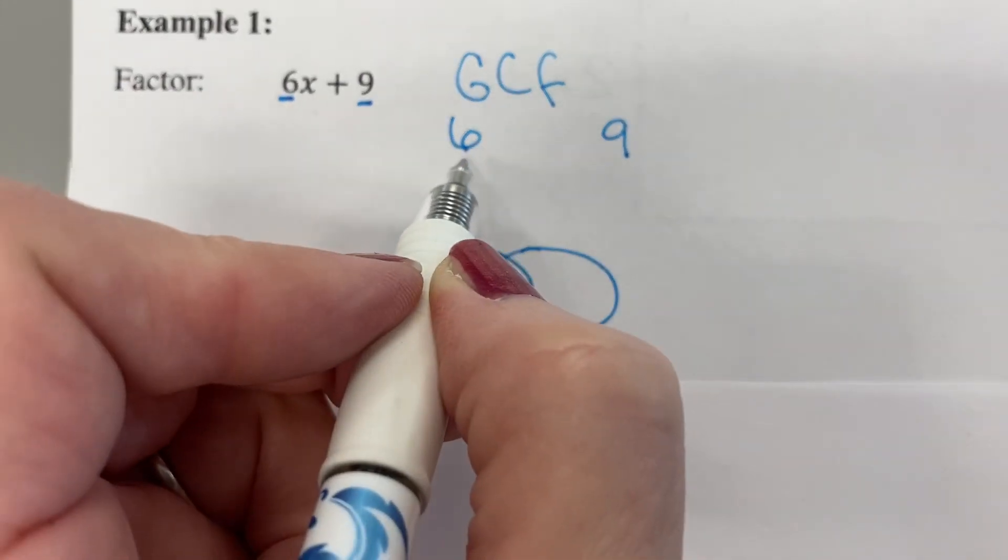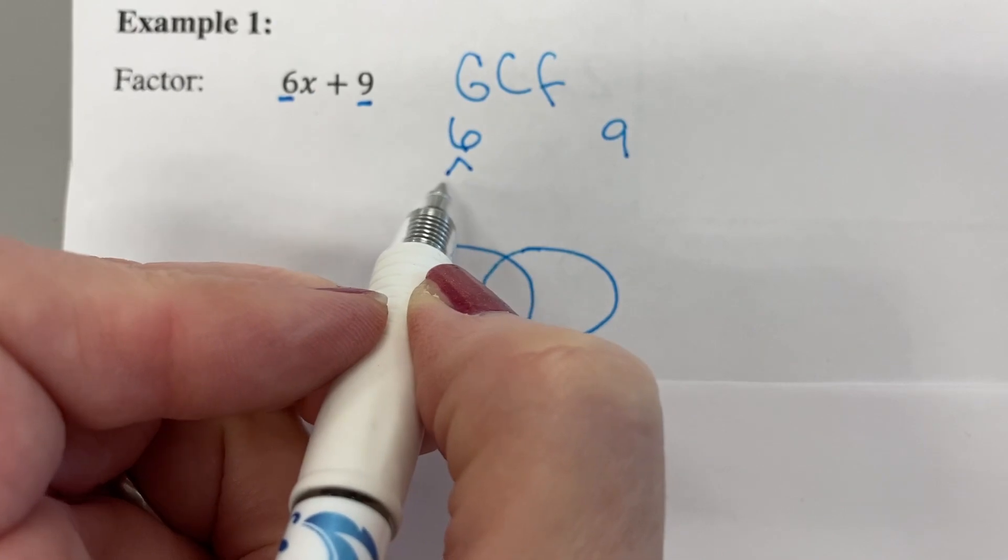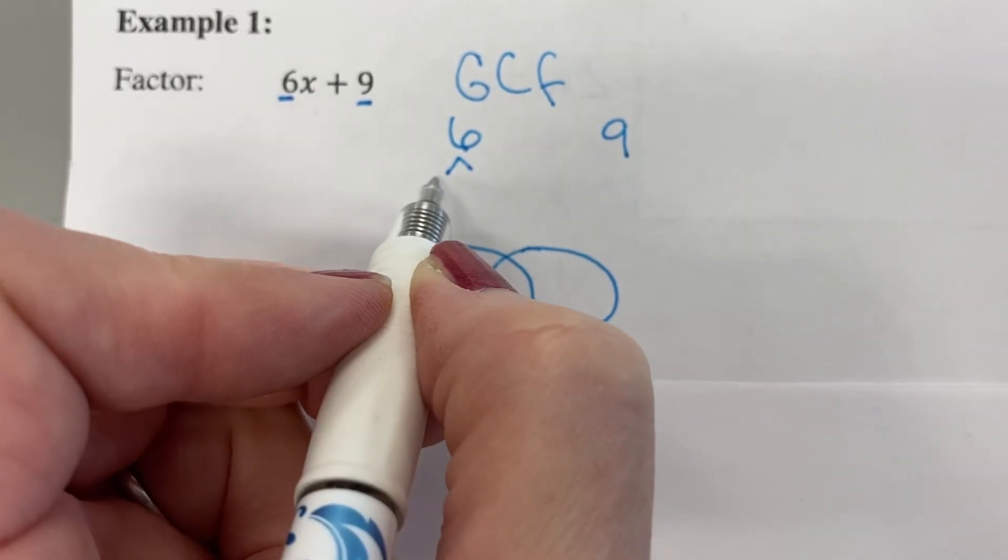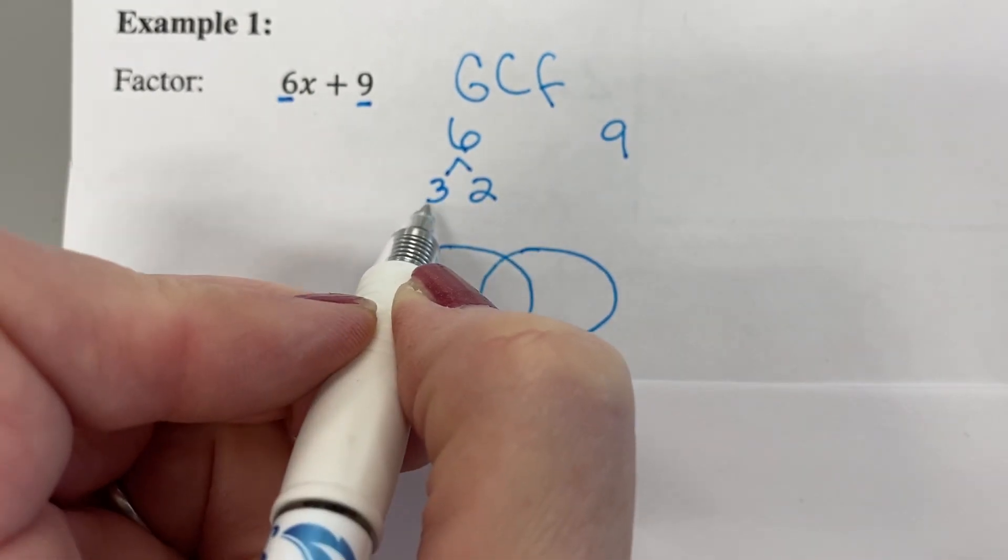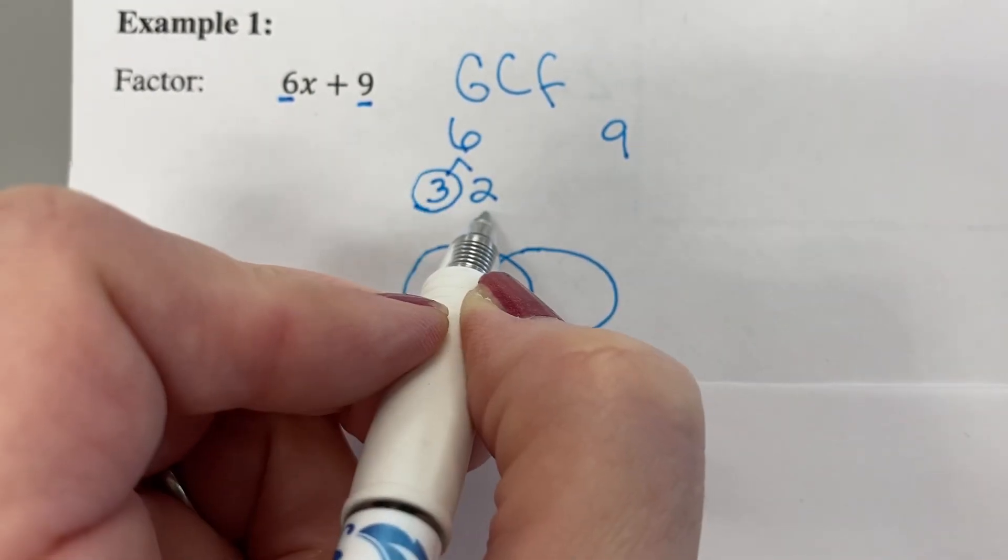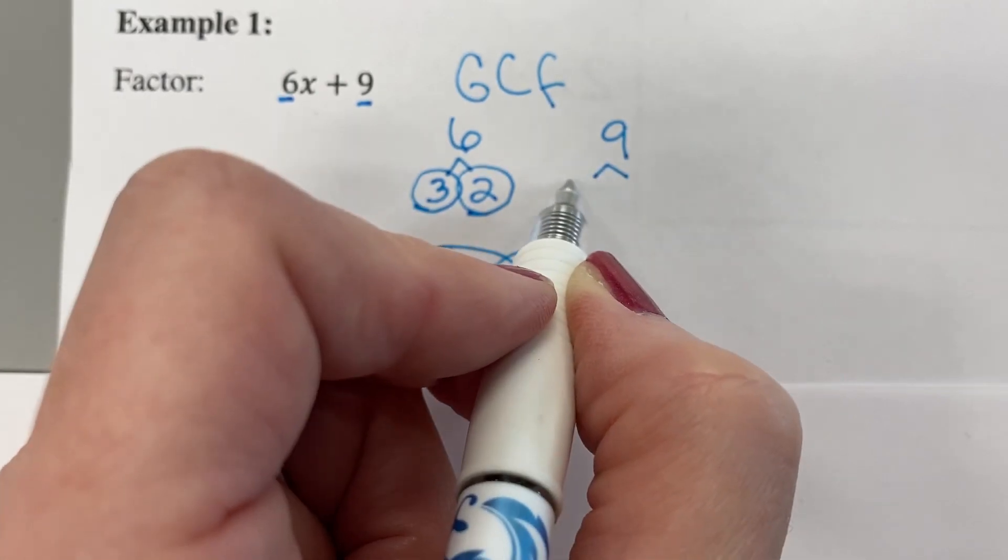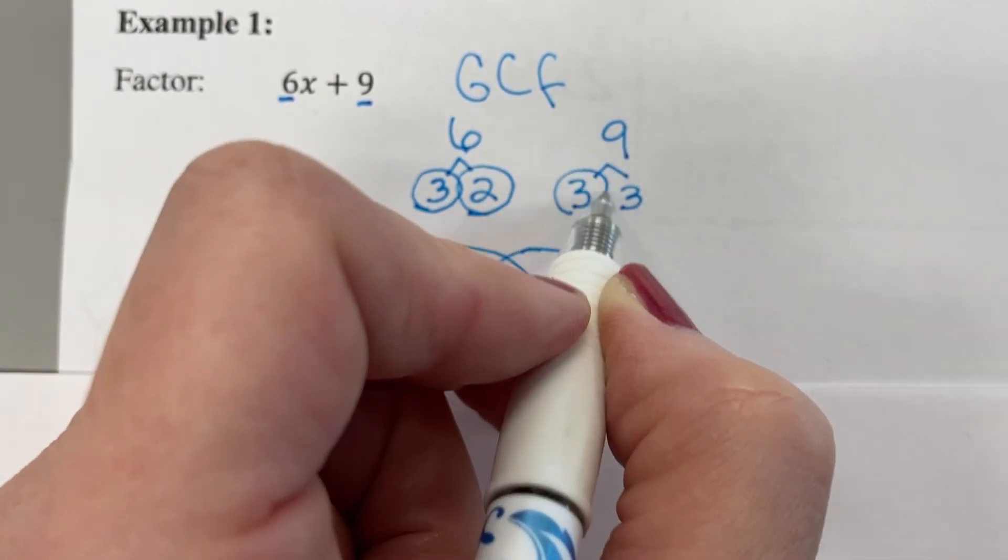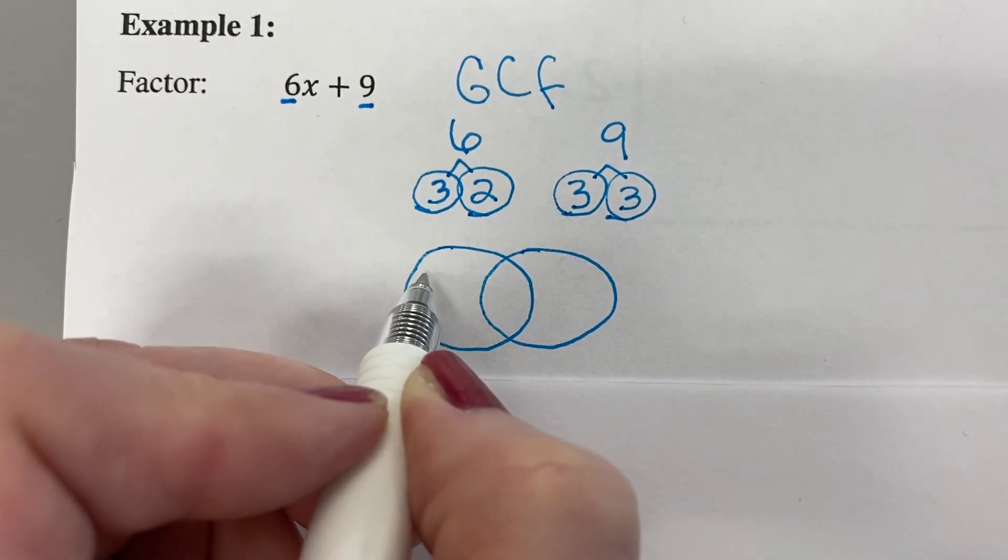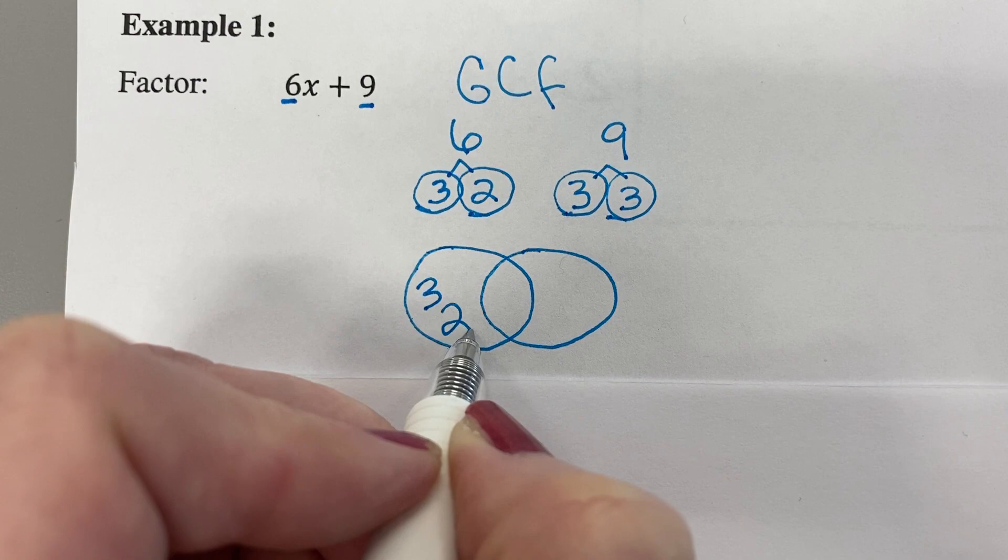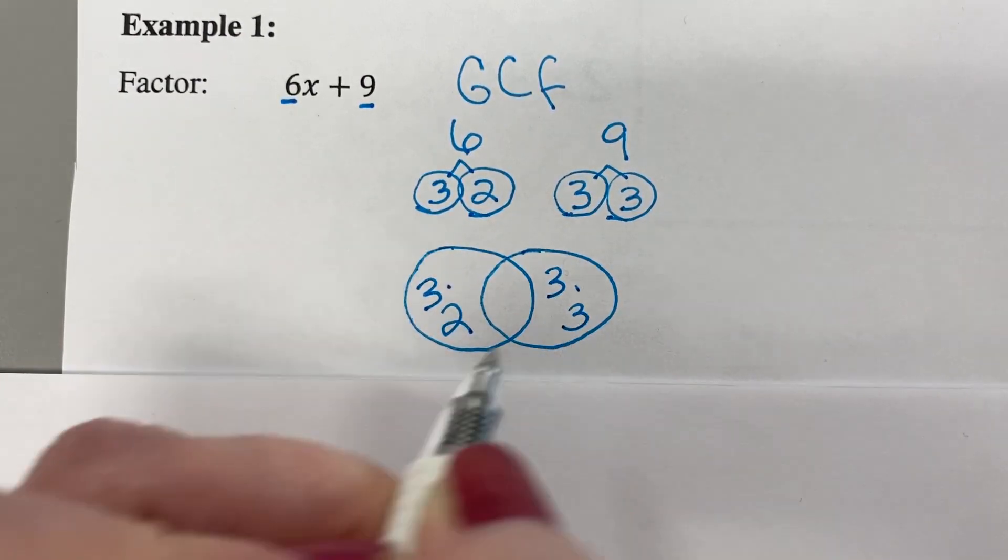Okay. So let's break down a 6 to its prime factors. Two numbers that multiply to give me 6 would be 3 times 2, and they're both prime. And then my 9 would become 3 times 3, and they're both prime. So on this side, I'm going to put 3 times 2, and on this side, 3 times 3.